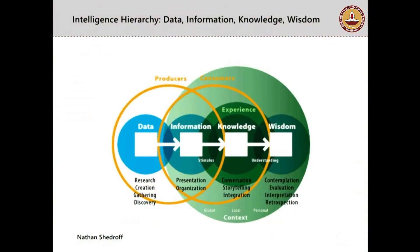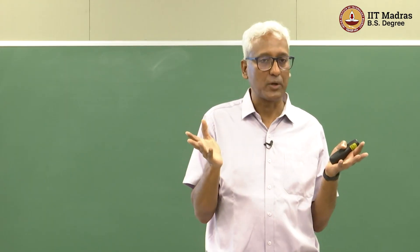How do you obtain data? Through research you can create data, you can gather it, you can discover it. These are the processes by which data is available to us. The moment you begin to present or organize this data, it becomes information. You can define one in terms of the other — data as unorganized information, or information as organized data. They are basically two sides of the same coin.